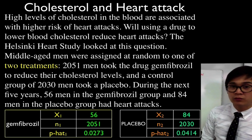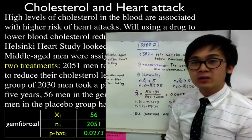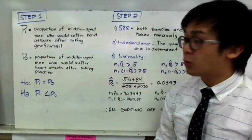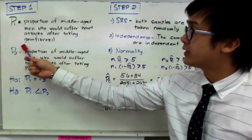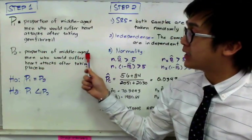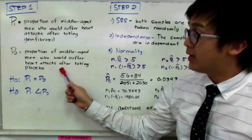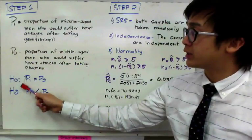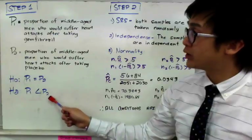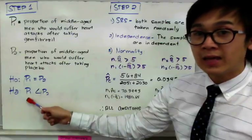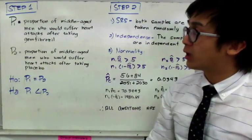For step one, we write our hypotheses. p sub 1 is the proportion of middle-aged men who would suffer heart attacks after taking gemfibrozil, and p sub 2 is the proportion who would suffer heart attacks after taking the placebo. The null hypothesis is p sub 1 equals p sub 2, and the alternative hypothesis is p sub 1 is less than p sub 2 — meaning the proportion of men suffering heart attacks after taking gemfibrozil is less than the proportion after taking the placebo.